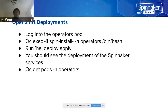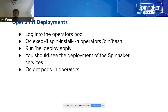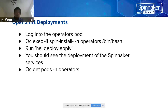For the OpenShift deployment, you log into the operator pod, then specify the spin-install pod, and use the `bin` shell. Once you get into the pod, you can run the `hal deploy apply` API. In this case, you will see the list of deployments of the Spinnaker services. At the end, you can run `oc get pod -n operator` to see the corresponding pods in the operator.